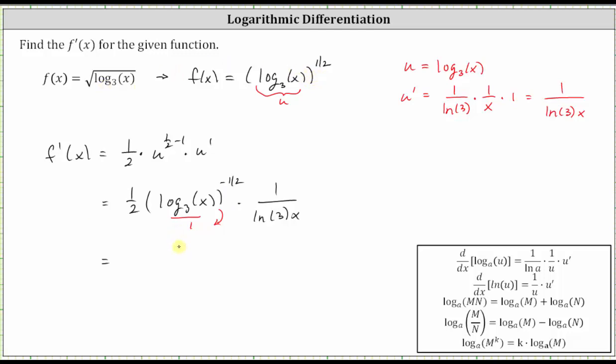So let's write the final derivative as one over two times natural log three times x, or two natural log three x. And then moving the log base three to the denominator, we have the square root of log base three of x.